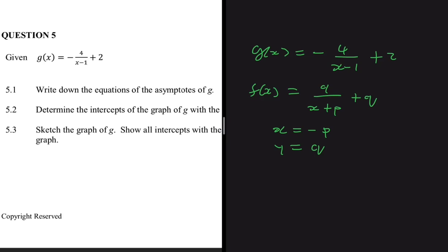Let's look at our equation g(x) and determine minus p and q. Starting with q — it's straightforward: we just have plus 2, so the horizontal asymptote is y equals 2. Now for the vertical asymptote, we look at x minus 1 in our equation, and since the asymptote must be x equals minus p, we see that p is minus 1.